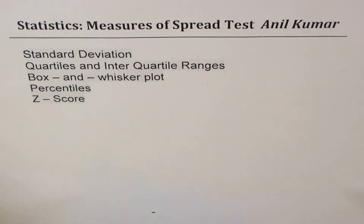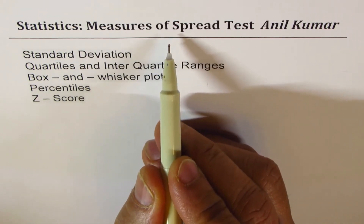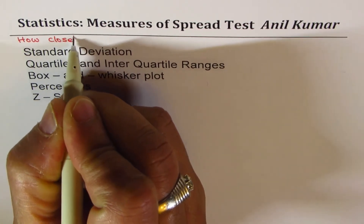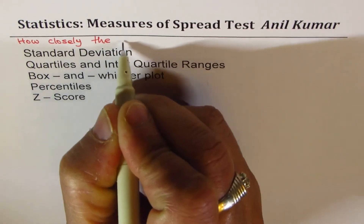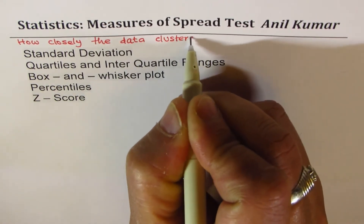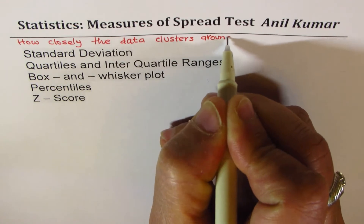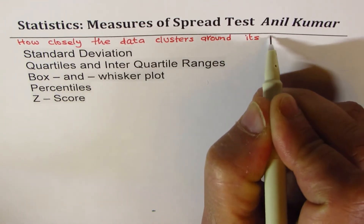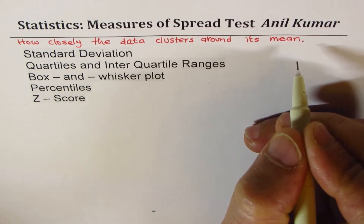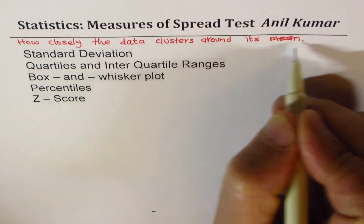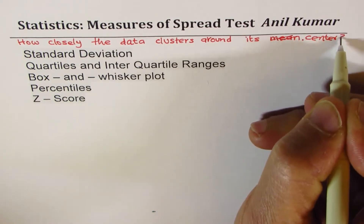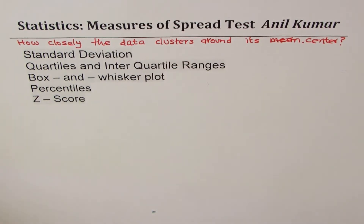When we talk about measures of spread, we are basically trying to figure out the answer to this question: how closely does the data cluster around its mean? That is the question we are going to answer. Normally, we don't use any particular type of mean — we just say center. So this is the question we are always answering in this unit.